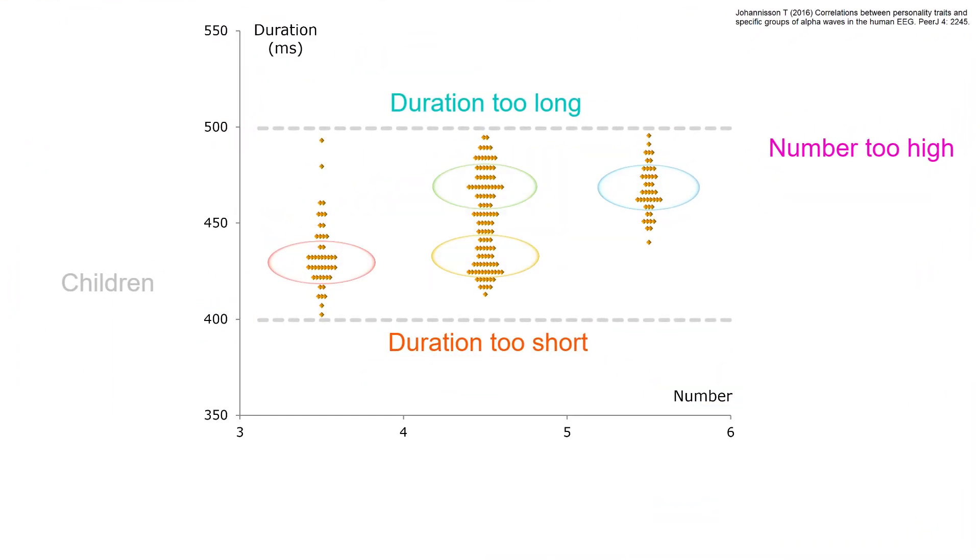Good mental health requires optimal number and duration. Number refers to the number of highly active columns in the cerebral cortex, and duration is the duration of the high activity in a column.